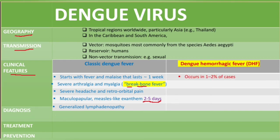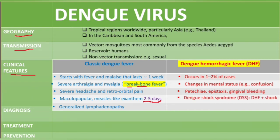Dengue hemorrhagic fever occurs in about 1 to 2 percent of cases. It is associated with changes in mental status such as confusion, as well as hemorrhagic manifestations including petechiae, epistaxis (nosebleeds), and gingival bleeding. It is also associated with increased vascular permeability, which can present as pleural effusion — abnormal fluid in the pleural cavity — and ascites, which is abnormal fluid in the peritoneal cavity.